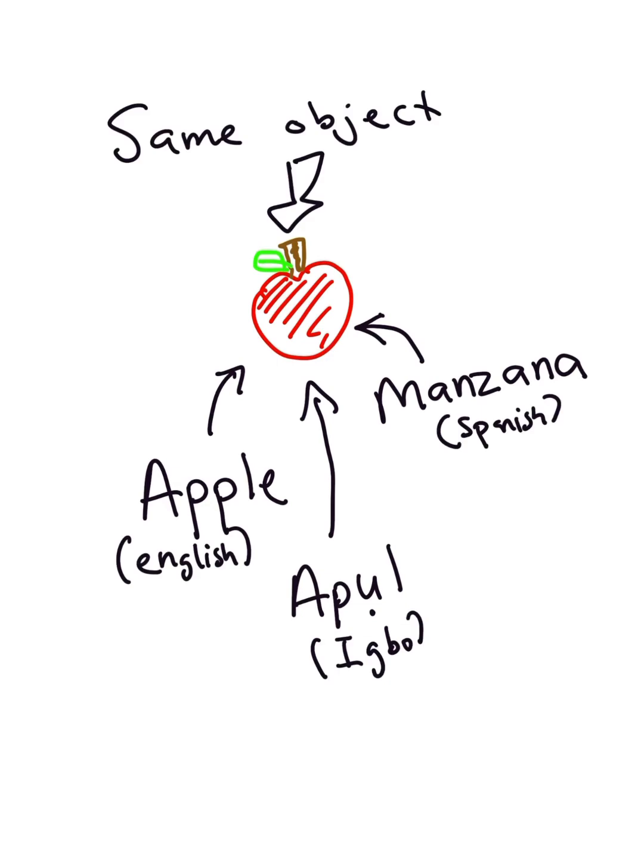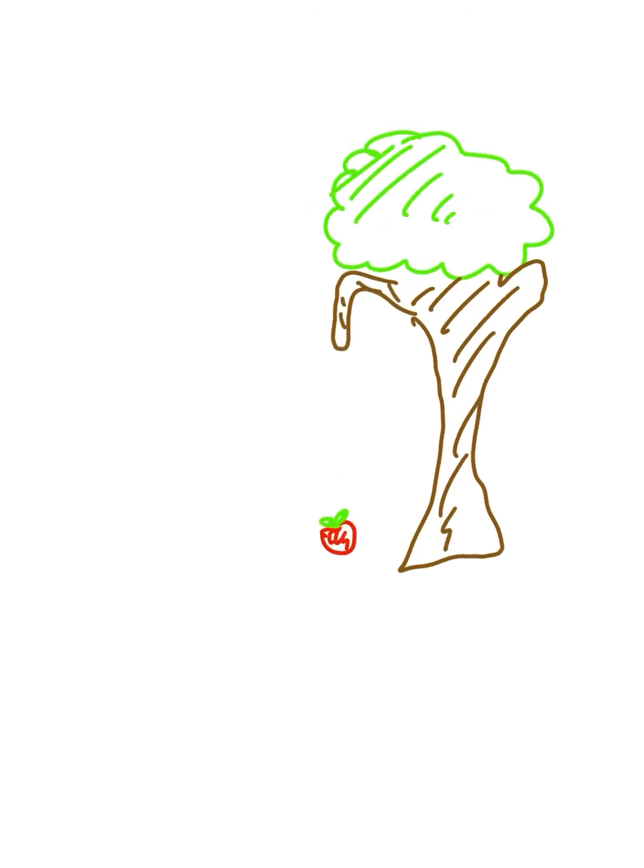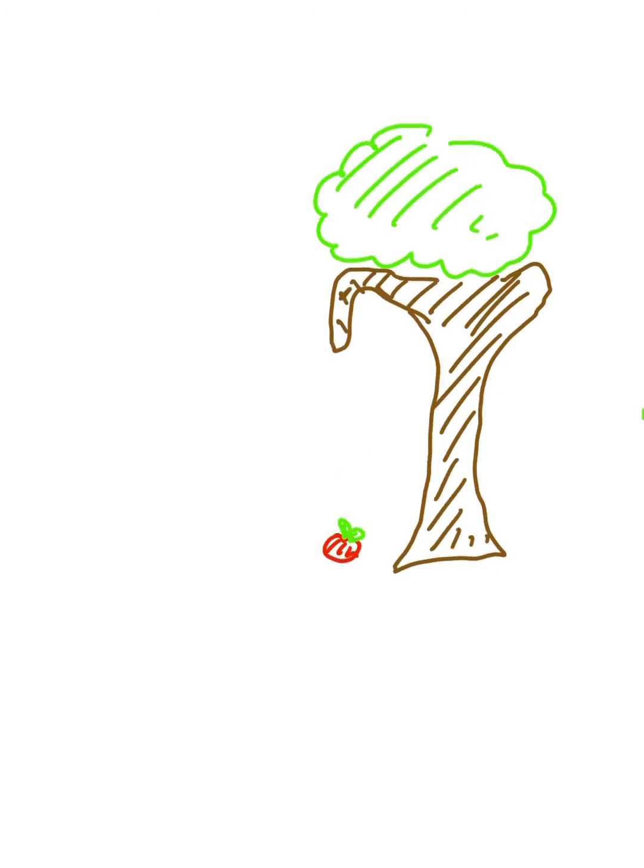The same thing happens in physics. We can describe the same phenomenon, like an apple falling from a tree, with different mathematical languages. Some of these languages have more advantages than others in certain situations.